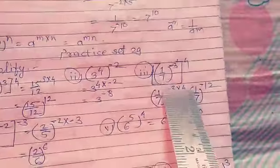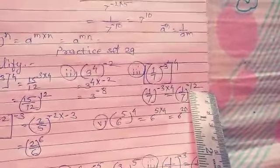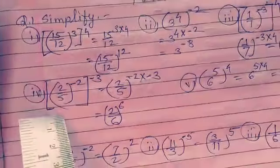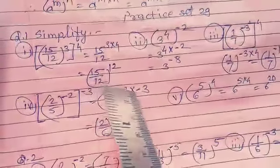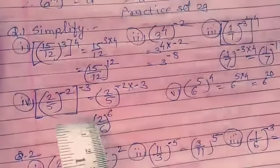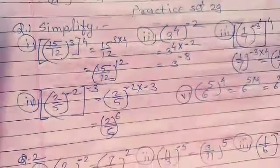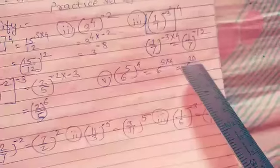Number 3: 1 upon 7 raise to minus 3, raise to plus 4. Multiply the exponents: minus 3 into 4 equals minus 12. So 1 upon 7 raise to minus 12. Number 4: 2 upon 5 raise to minus 5, raise to minus 2. Minus times minus gives plus, so 2 upon 5 raise to 6. Number 5: 5 upon 6 raise to 5, raise to 4. Multiply: 5 into 4 equals 20. So 6 raise to 20 is the right answer.